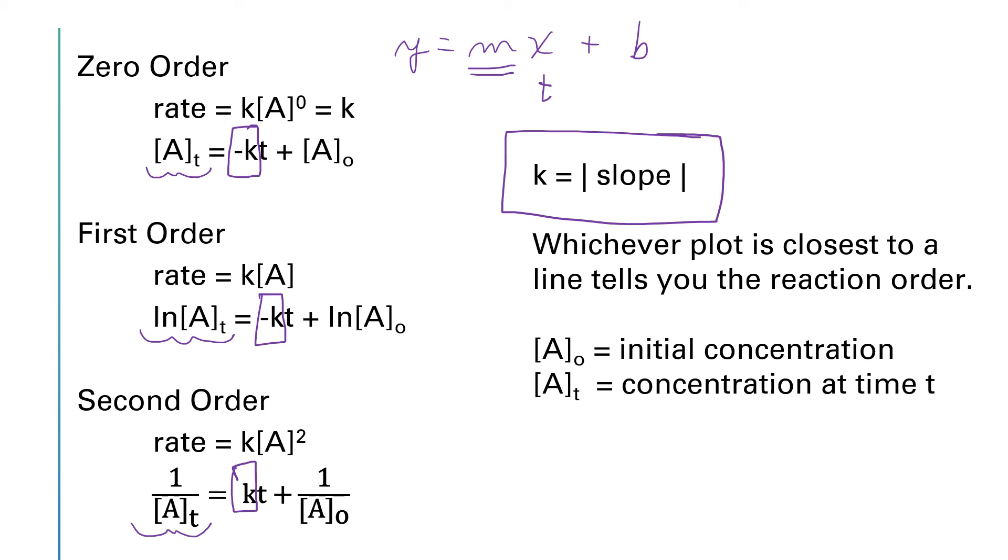Remember, in terms of our symbols, [A]_0 is our initial concentration. [A]_t is a concentration at time t. And if you make all three of these plots, whichever plot is closest to a line will tell you the reaction order. So if the concentration plot is closest to being a line, we know it's a zero order reaction. But if instead the log plot is closest to a line, then it's a first order reaction. And if the reciprocal plot is closest to a line, it will be a second order reaction.